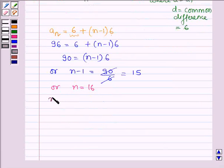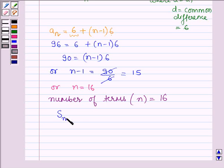Denoting it by small n, it is equal to 16. Now, we have to find the sum of these 16 terms. As we know,